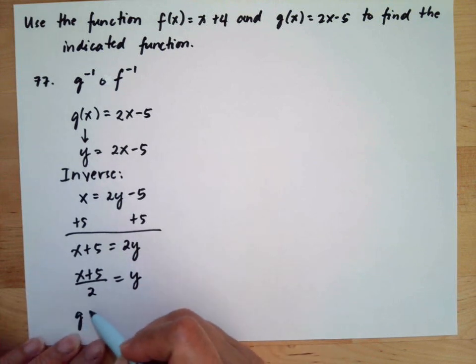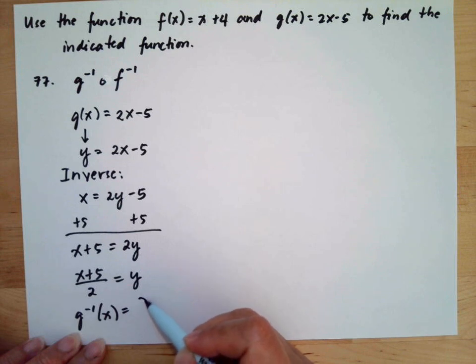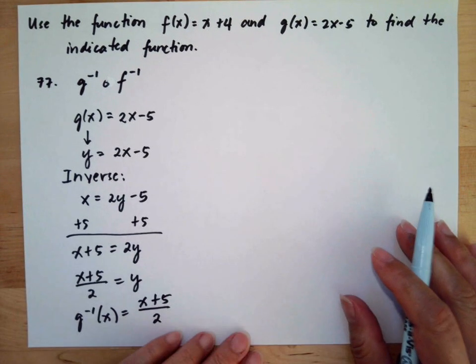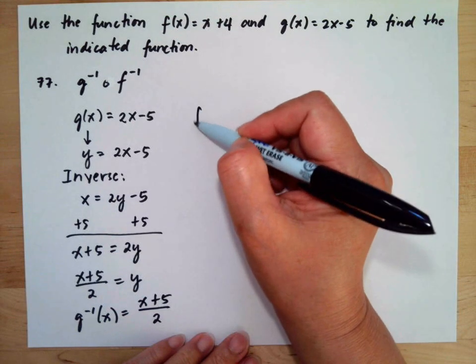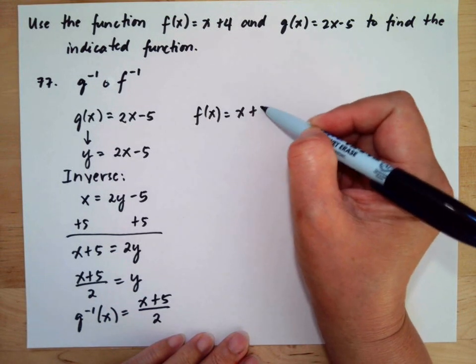Therefore, the inverse of g(x) equals (x + 5)/2. Then for the inverse of f(x), we have x + 4.